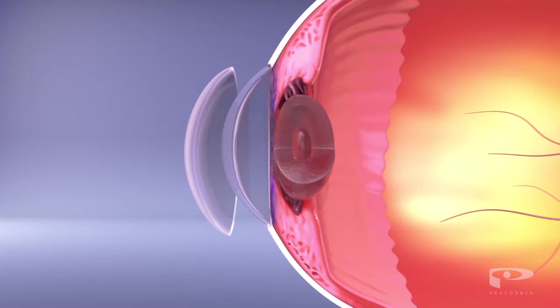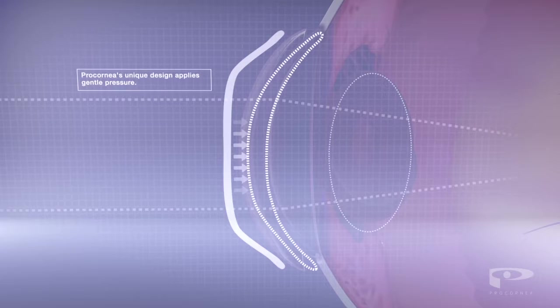The highly breathable lenses are worn overnight and change the shape of the cornea through gentle pressure, realigning the focal point onto the retina while you sleep.